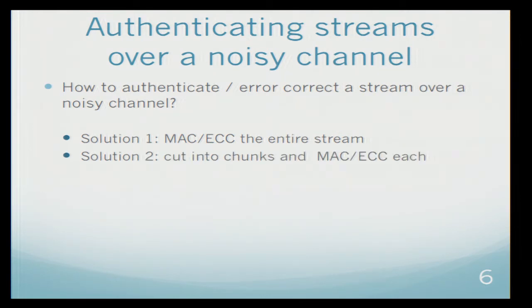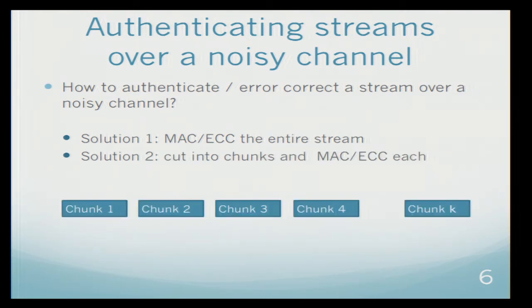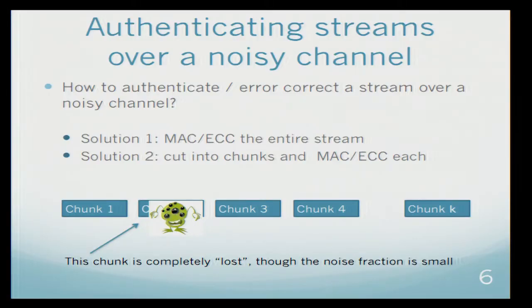The second solution that most of you will come up with would be the following. Take the stream, cut it into small chunks and add MAC or perform some error correction on each chunk separately. This is actually quite a nice solution but it has this problem. Let's assume the adversary comes and completely corrupts one of the chunks. The information in that chunk is lost. Bob will never be able to recover this information.